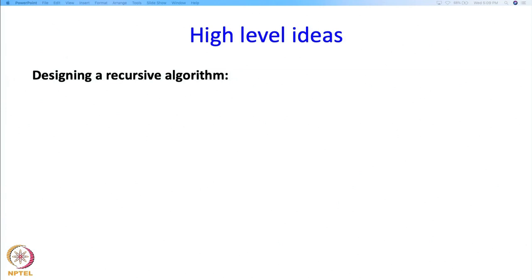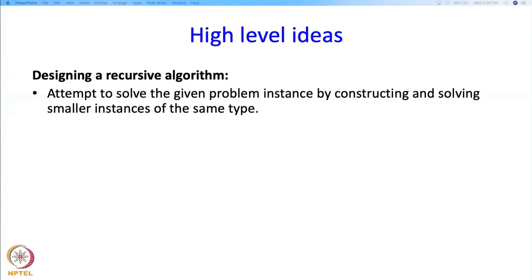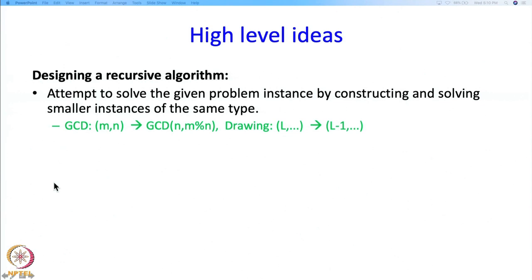You may well find yourself designing such algorithms. How do you do this? You first attempt to solve the problem given to you by constructing and solving a smaller problem of the same type. This is exactly what we did for GCD as well as for drawing. When we wanted to find the GCD of M and N, we instead computed the GCD of M and M mod N, because these numbers are in fact smaller — we are reducing the size of the problem.